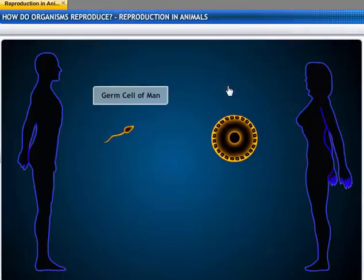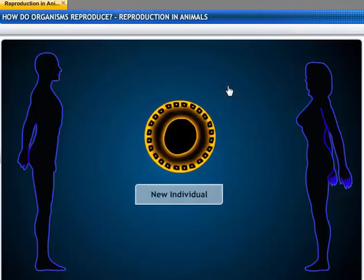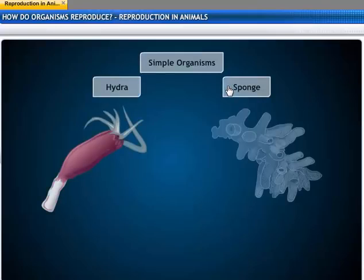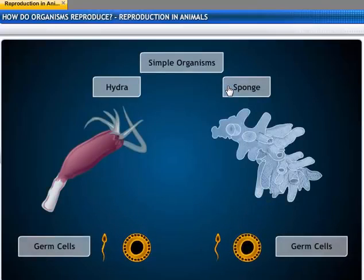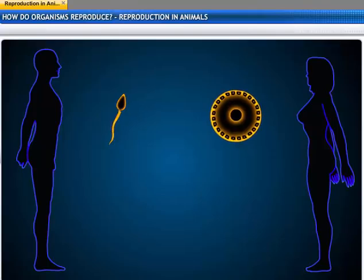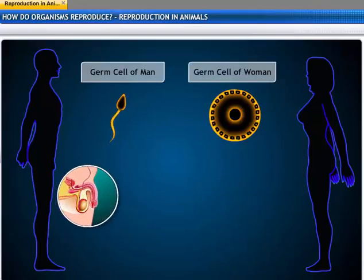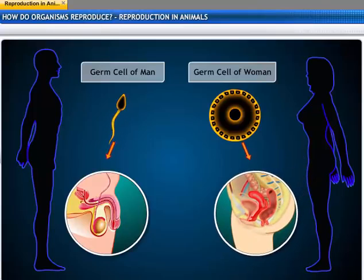When germ cells from two individuals combine during sexual reproduction, a new individual is formed. In simple organisms, two germ cells may be quite similar to one another. In complex organisms, the germ cells are more specialized. One germ cell is large and stores food, while the other is smaller and motile. This motile germ cell is the male gamete, and the larger germ cell is the female gamete. This differentiation in germ cells leads the female and male reproductive organs to be different, causing dissimilarities in the bodies of male and female animals.